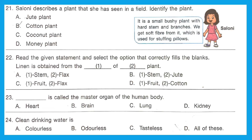Question 21: Saloni describes a plant she has seen in a field — it is a small bushy plant with a hard stem and branches, which means it is a shrub. We get soft fiber from it used for stuffing pillows, which is cotton. The plant described is the cotton plant, which is also a shrub. Option B is the right answer.